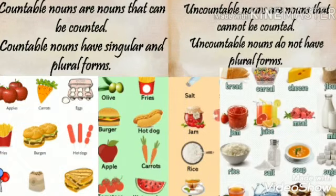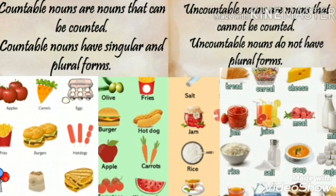Countable nouns are nouns that can be counted. Countable nouns have singular and plural forms. But uncountable nouns cannot be counted, so they are called uncountable nouns. Uncountable nouns cannot have plural forms. Keep it in mind — uncountable nouns have only a plural-equivalent form, but no countable plural.